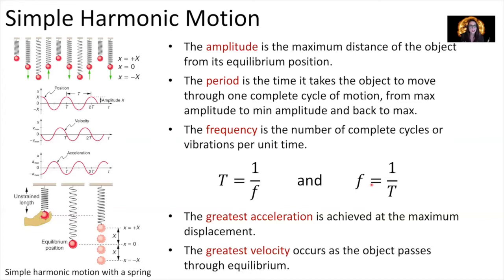You can always find the frequency of oscillation by counting how many oscillations occur over some time period — usually in seconds. The unit of frequency is one over seconds, or inverse seconds, and sometimes we just call it a hertz, abbreviated Hz.